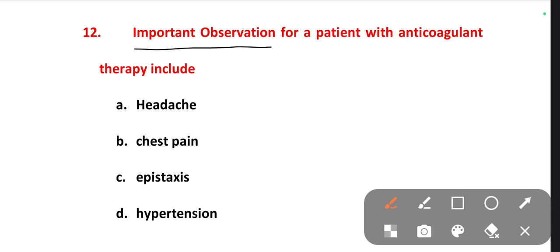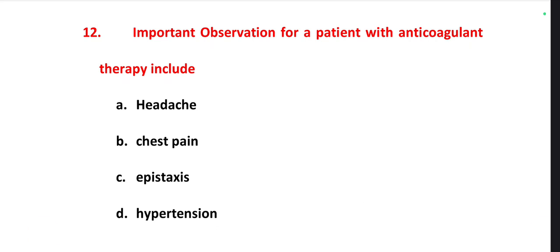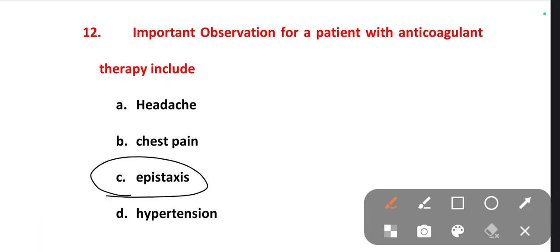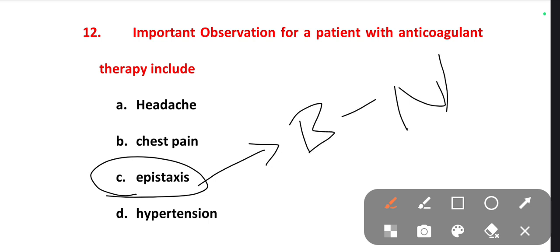The next one is: the important observation for a patient with anti-coagulant therapy. When you are giving anti-coagulant therapy to a patient, which is the most important observation? Options are headache, chest pain, epistaxis, hypertension. The right one is epistaxis — epistaxis is bleeding from the nose. When the person is taking anti-coagulant therapy, the blood will not clot immediately, so the patient is at risk for epistaxis and we need to check for bleeding from the nose.